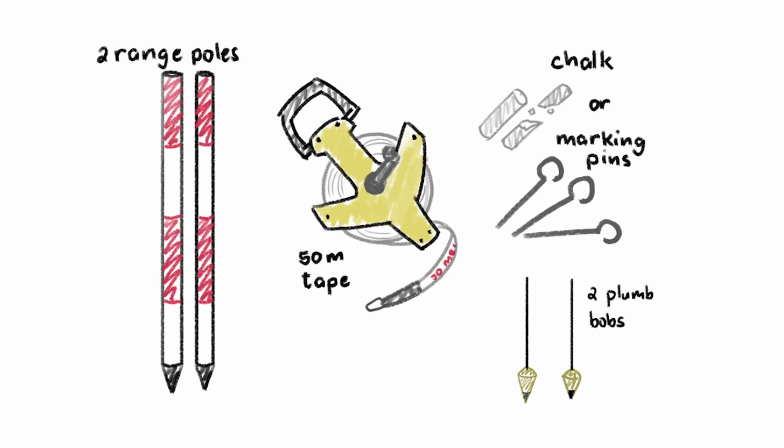The equipment that we need are two range poles, a 50 meter tape, chalk or marking pins. We use chalk for hard pavement, we use marking pins for soft ground, and then two plumb bobs.